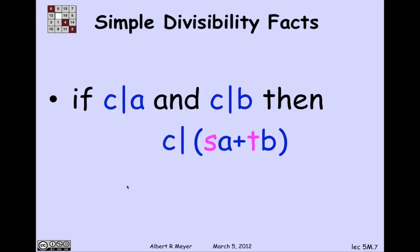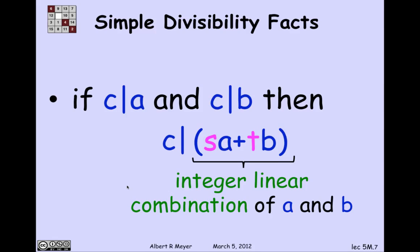Let's put those facts together. If C divides A and C divides B, then C divides SA plus TB, where S and T are any integers at all. So a combination of two numbers A and B like this is called a linear combination of A and B, an integer linear combination. But since we're only talking about integers, I'm going to stop saying integer linear combination and just say linear combination. A linear combination of A and B is what you get by multiplying them by coefficients, S and T, and adding them.